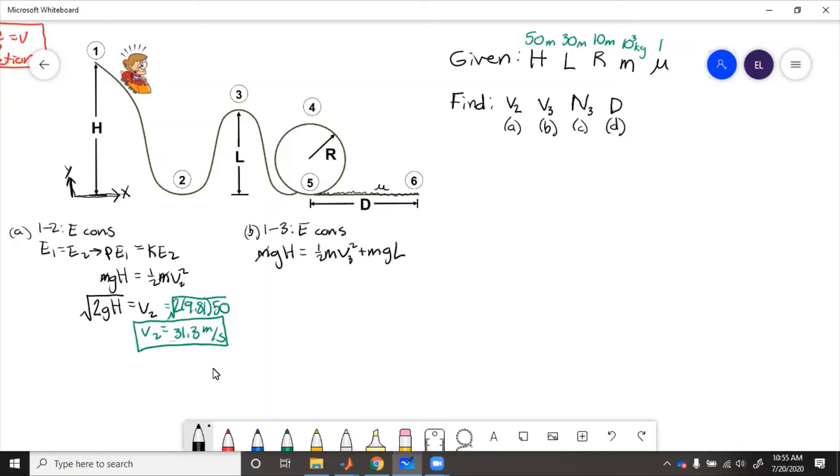Again, we can cancel masses, rearrange, we have g times h minus l equals one-half v3 squared. So 2g times h minus l square rooted equals v3.